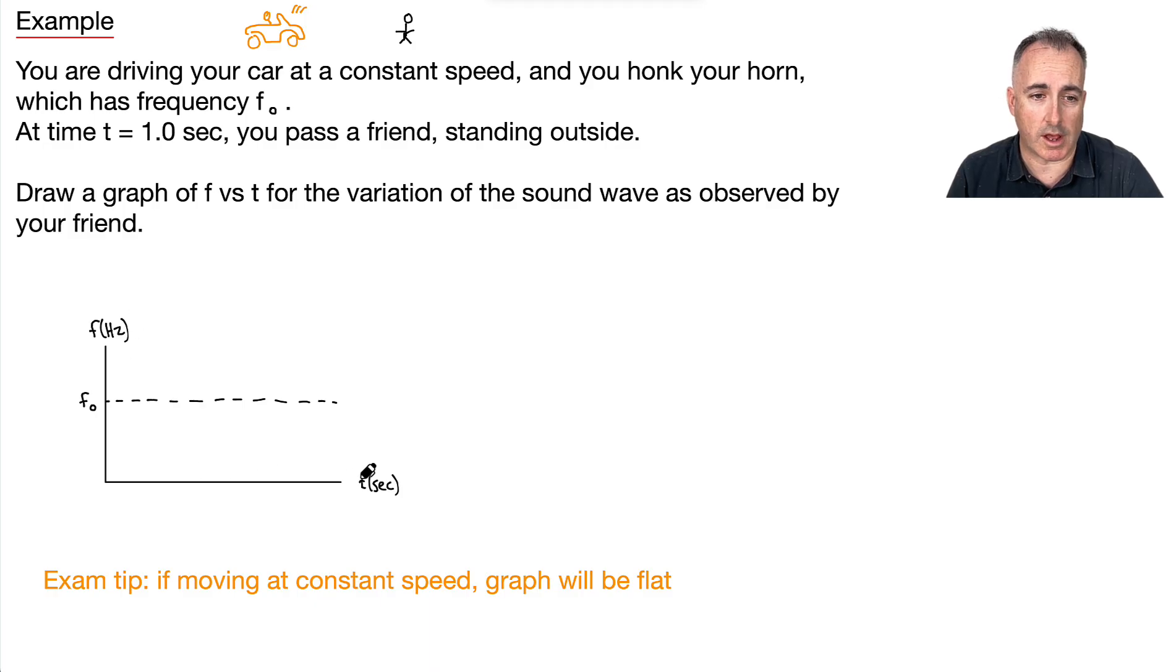So this car horn, the sound is coming out at F0. In other words, here, over time, this is going to be the frequency. It's just going to be F0. So if you're sitting in the car, that's the sound you're going to hear the whole time. It's going to be a constant sound for you in the car. Now, at time T equals 1.0 seconds, you pass your friend standing outside.